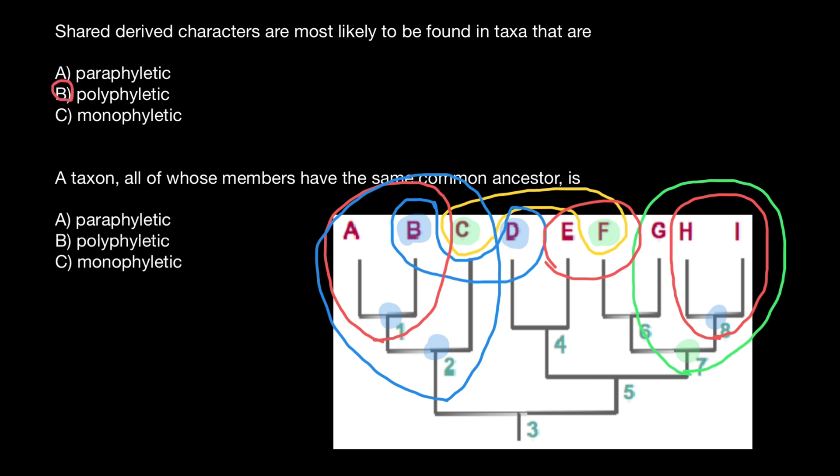And next question: a taxon, all of whose members have the same common ancestor, here is, again, monophyletic group. And this is answer C.